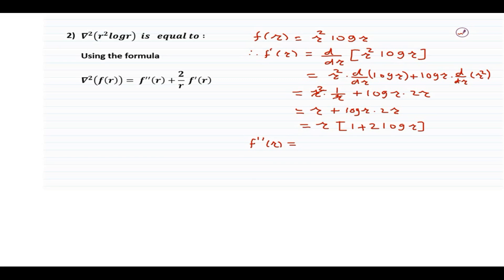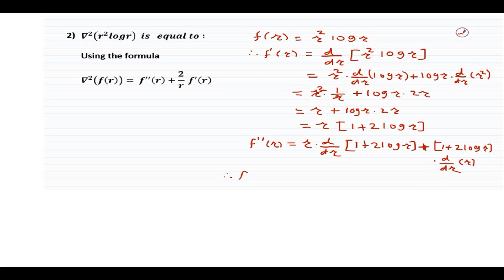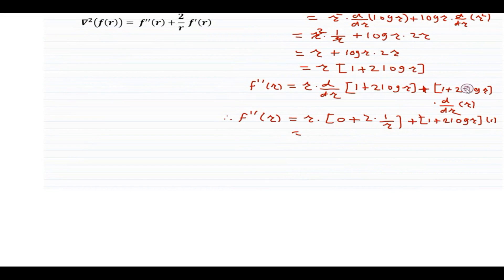Now differentiating again using the product rule: f''(r) = r·(d/dr)(1 + 2 log r) + (1 + 2 log r)·(d/dr)(r). This gives r·(2/r) + (1 + 2 log r)·1 = 2 + 1 + 2 log r = 3 + 2 log r.